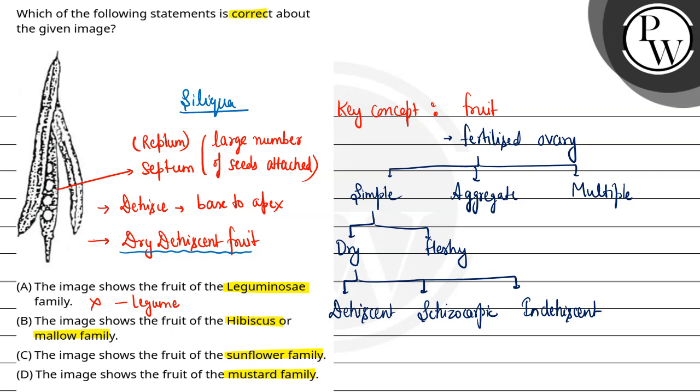Second option: the image shows fruit of hibiscus and mallow family. In hibiscus family, we find capsule, so this is incorrect. Third option: the image shows fruit of sunflower family, so this is incorrect. In sunflower, we find cypsela, which is an indehiscent dry fruit.